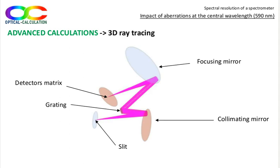Here is a 3D ray tracing with the slit centered on the focal point of the collimating mirror. The grating which is, for the occasion, replaced by a flat mirror because the software doesn't manage the gratings. The matrix of pixels is placed in a plane close to the focal plane of the focusing mirror. This layout is given for the central wavelength, which is 590 nanometer. As mentioned above, it is not the real layout.